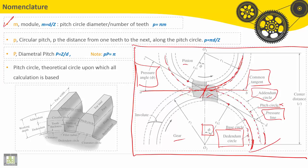First here we have M. What is M? M is the module. It equals the pitch circle diameter divided by the number of teeth: D divided by Z.